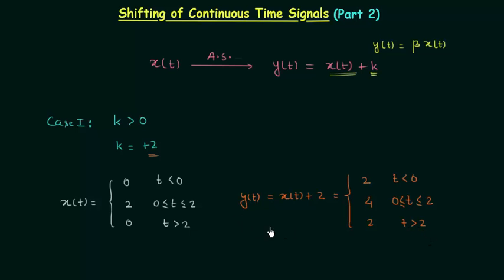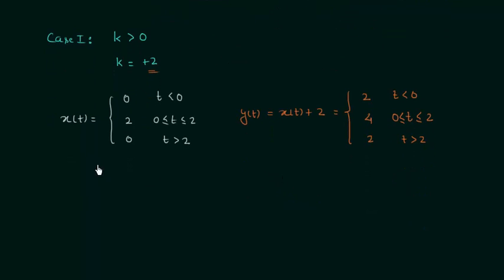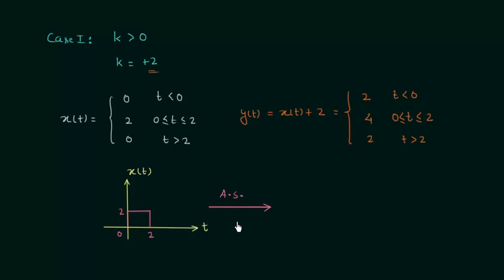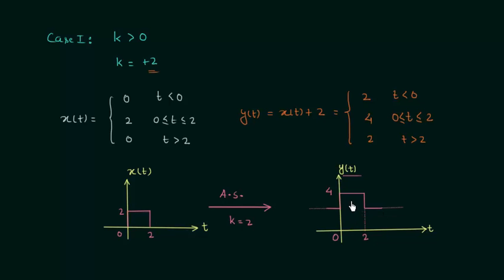This is how we define the new signal after amplitude shifting, and we can easily plot the original signal and the new signal. The waveform of xt is shown, and after performing amplitude shifting with k equal to 2, the waveform of yt is shifted upward. So case number 1 is the case of upward shifting.